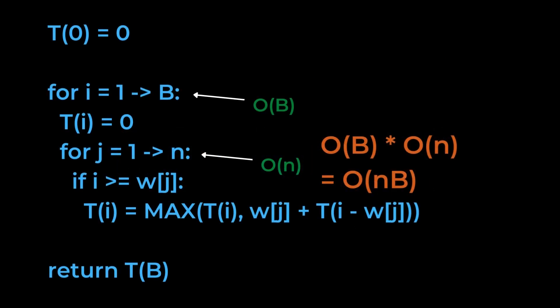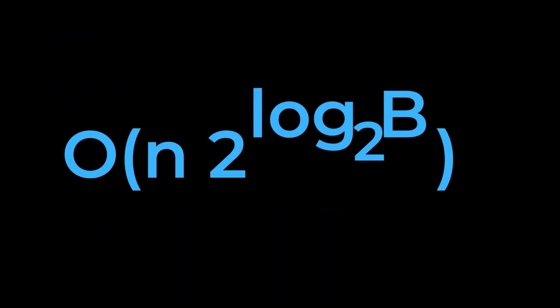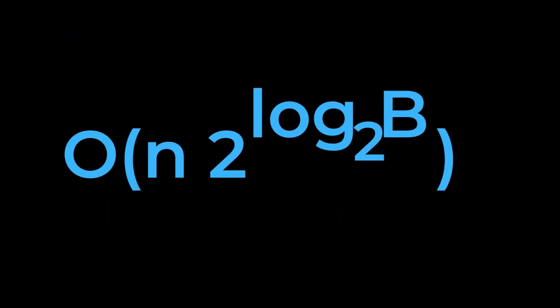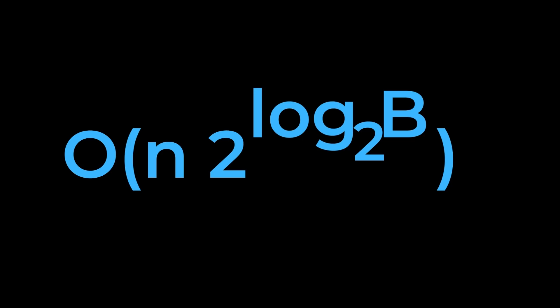The dynamic programming algorithm presented earlier is actually exponential, as we're effectively taking 2 to the power of the input size. We call algorithms that are polynomial in the value of their inputs, but exponential in the size of those inputs, pseudopolynomial algorithms.